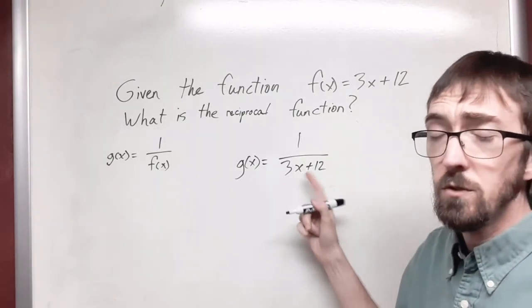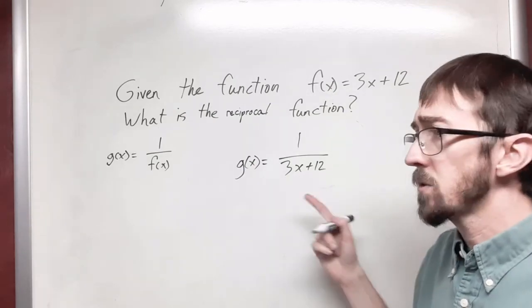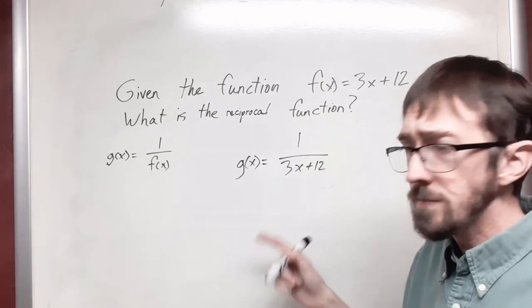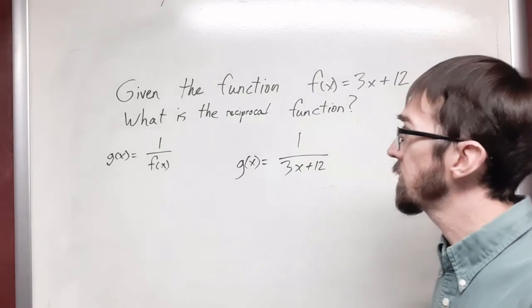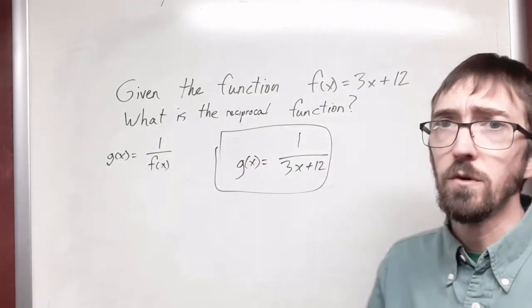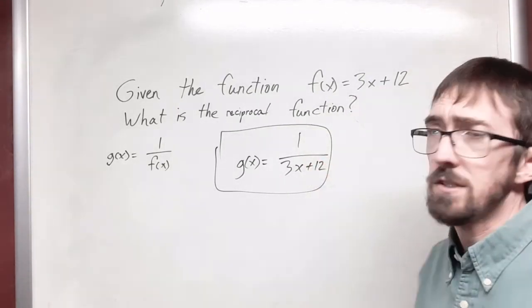You will see that there is a domain limitation here that you did not have in the original one because you've now introduced your independent variable into the denominator. And so, there's got to be some x value that's not going to be allowed here and that's going to limit your y. So, there's an asymptote that's going to be involved in here, but this is what we're looking for when we're looking for a reciprocal function. It's the original function written as a unit fraction.